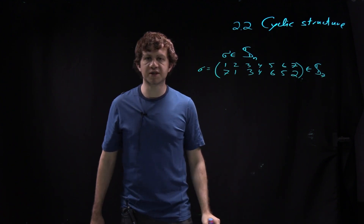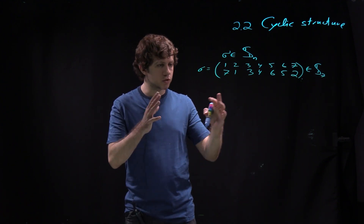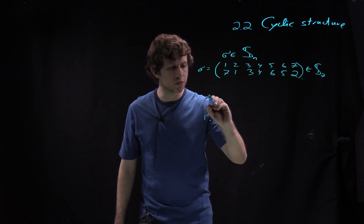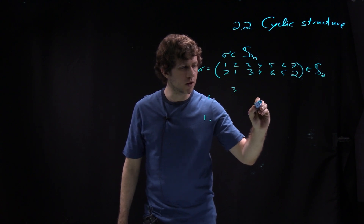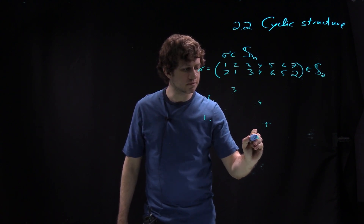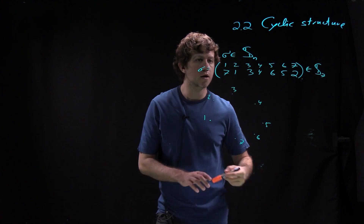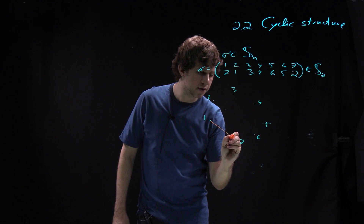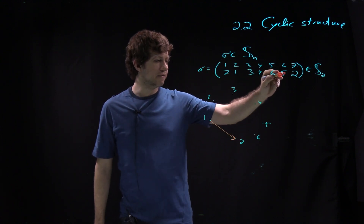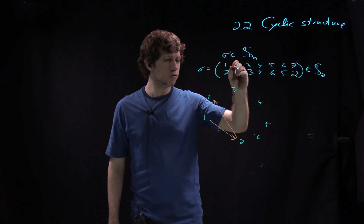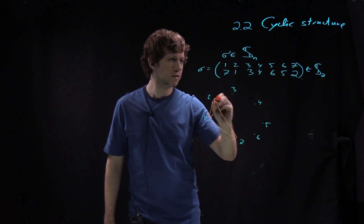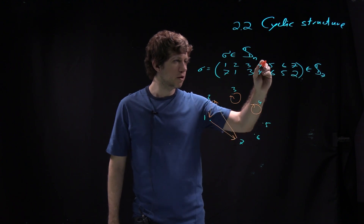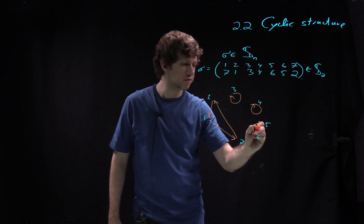If you want to understand what this permutation does, it makes sense to draw a picture. We have 1,2,3,4,5,6,7 points and we draw where each point goes. So 1 goes to 7, 7 goes to 2, 2 goes to 1, 3 goes to 3, 4 goes to 4, 5 goes to 6, and 6 goes to 5.